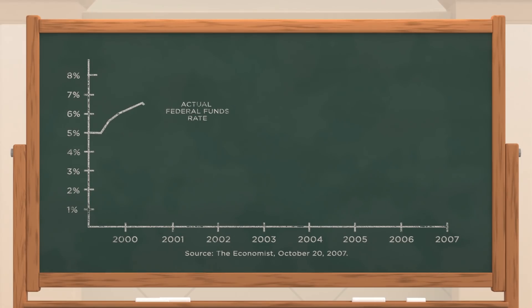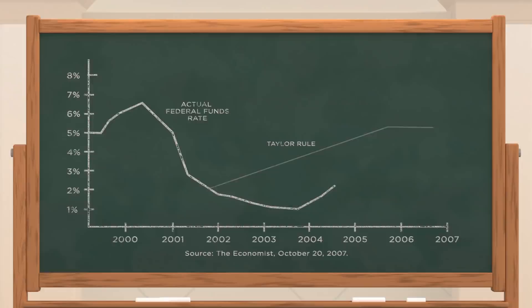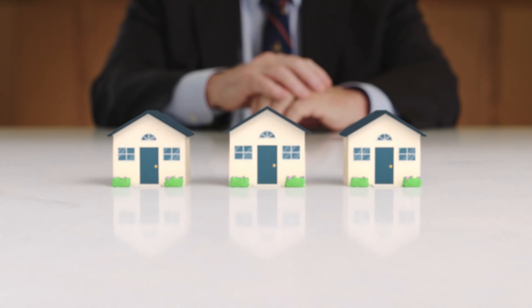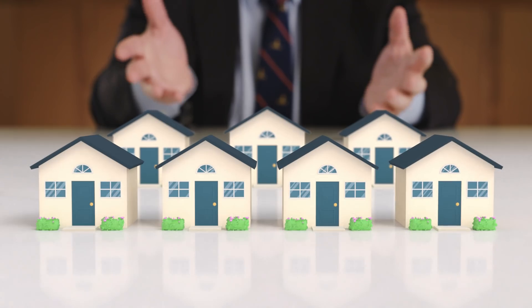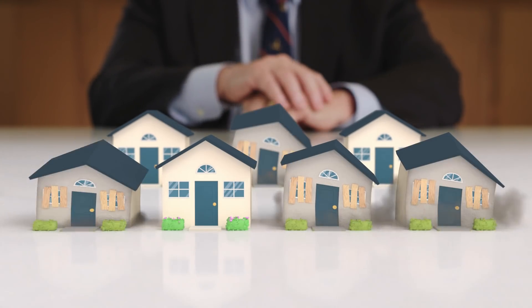Unfortunately, monetary policy got off track in the years leading to the Great Recession of 2007 to 2009. When inflation picked up following the mild recession of 2000, the Federal Reserve should have started raising interest rates. Instead, it made a mistake by opting to keep rates too low for too long. This discretionary policy helped fuel a housing boom and subsequent bust, contributing to the harmful economic downturn.